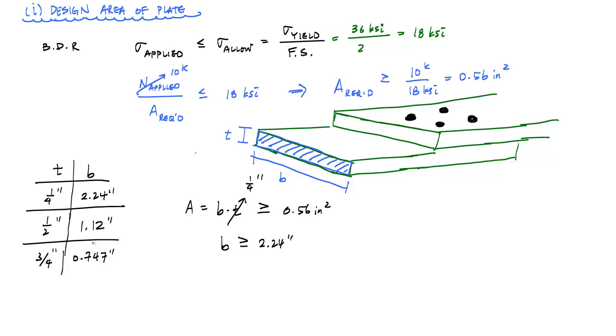So looking at my design results, I can, as an engineer, I could choose what's the most efficient or whatever's going to fit my application. And here, in this case, if I choose a quarter-inch plate, I'm probably going to specify a plate that is a quarter-inch by two and a quarter inches.